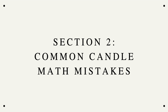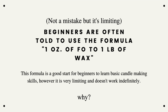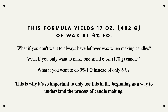Section two is common candle math mistakes. The first one is not a mistake but is very limiting, and it's very common amongst beginners: using one ounce of fragrance oil to one pound of wax. It's really good for beginners to understand the fundamentals of candle making, but it shouldn't be used indefinitely. This formula yields 17 ounces or 482 grams of wax at 6% fragrance oil — so what if you only want to make one small six ounce candle, or want to use 9% fragrance oil instead?